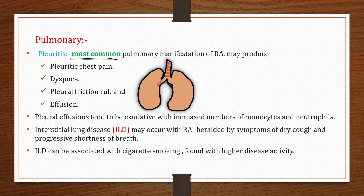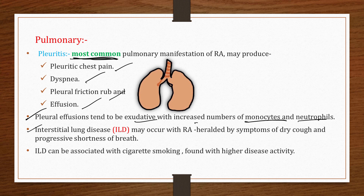Regarding pulmonary manifestations, pleuritis is the most common pulmonary manifestation of RA and may produce pleuritic chest pain, dyspnea, pleural friction rub, and effusion. The pleural effusion tends to be exudative with increased monocytes and neutrophils. Interstitial lung disease (ILD) may also occur, heralded by dry cough and progressive shortness of breath, and is associated with cigarette smoking and higher disease activity.